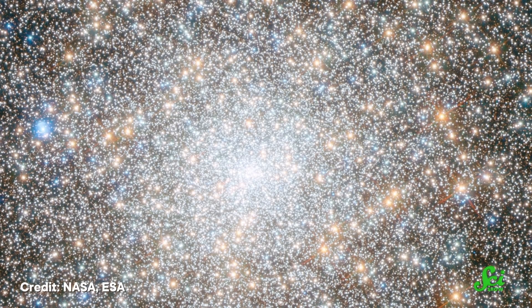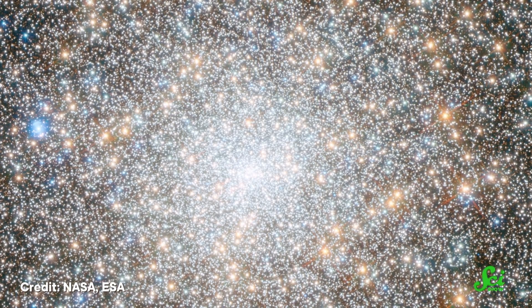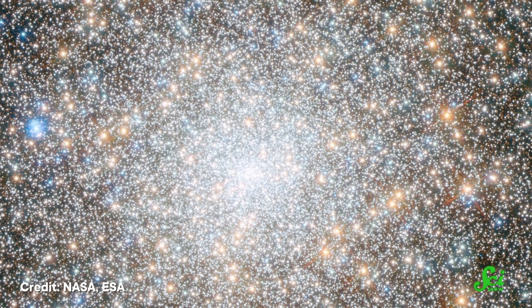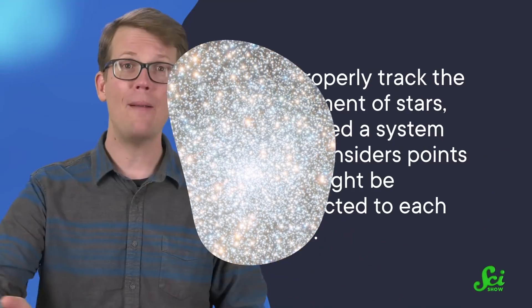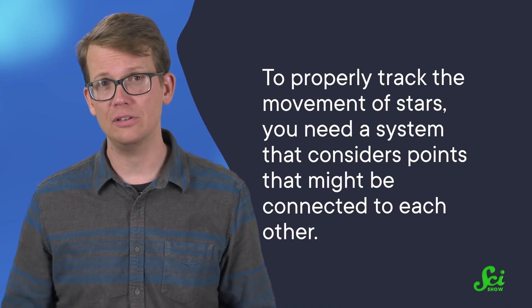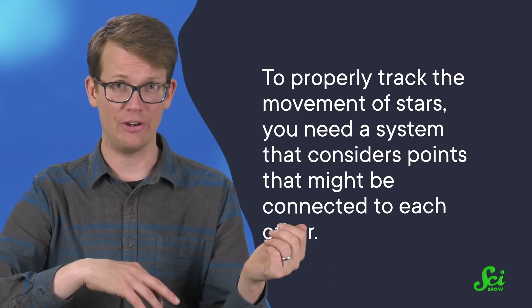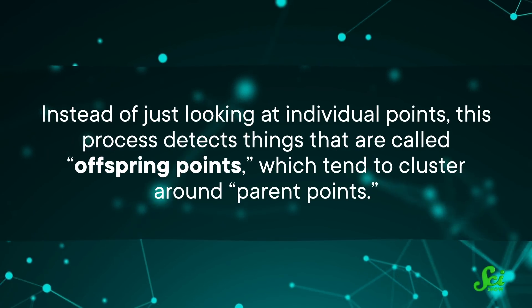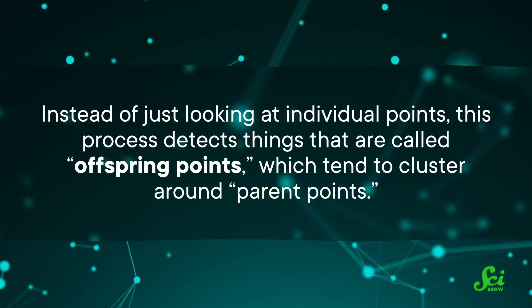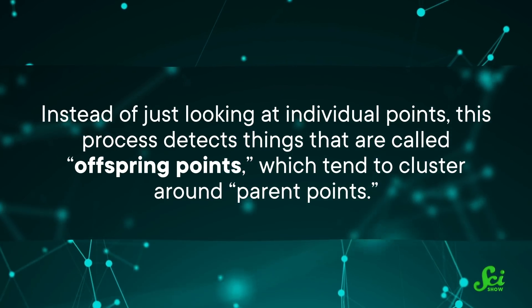Stars and galaxies are affected by gravitational attraction, which means they tend to be associated more with certain stars than others, and might even group around a central point. So to properly track the movement of stars, you need a system that considers points that might be connected to each other. And that is where the Neyman-Scott cluster process comes in.